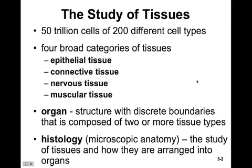There are 50 trillion cells of 200 different cell types. Within those, there are four broad categories of tissues: epithelial tissue, connective tissue, nervous tissue, and muscular tissue.